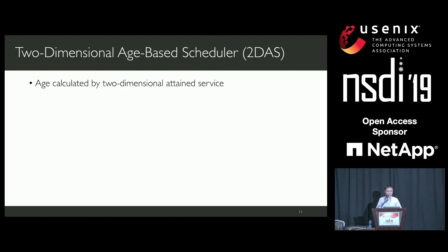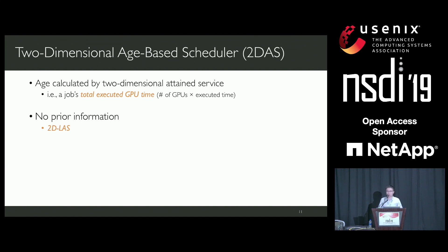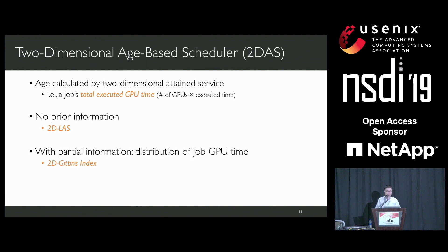In this scheduler, job age is calculated by the two-dimensional attained service—in this problem, the job's total executed GPU time. Our scheduler can work with different available job information. When there is no prior information provided, we use the two-dimensional LAS algorithm, where jobs that have received less service have higher priority. If the cluster can provide the distribution of jobs' total GPU time from previous experience, we use the two-dimensional Gittins index to schedule jobs. I will use a simple example to introduce more details of the two-dimensional Gittins index algorithm.